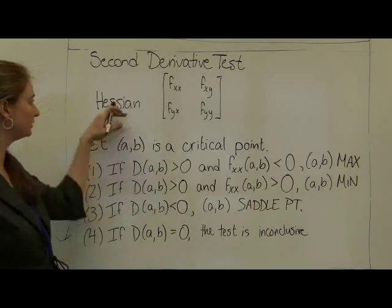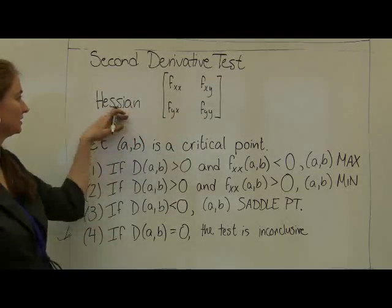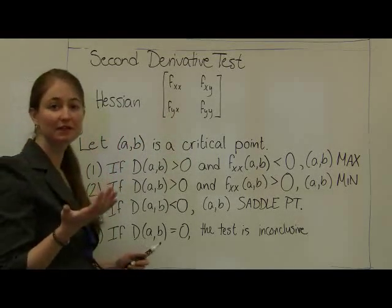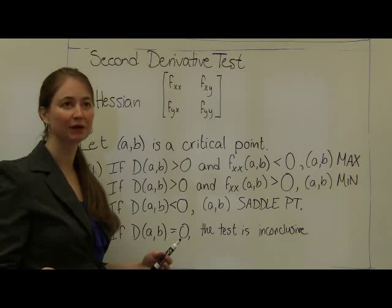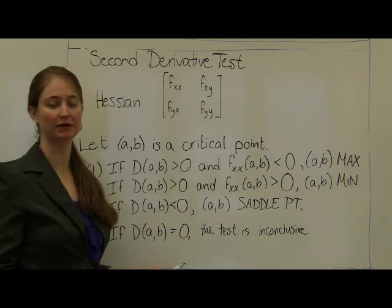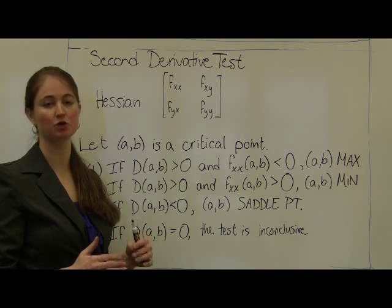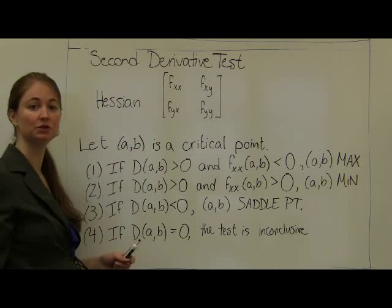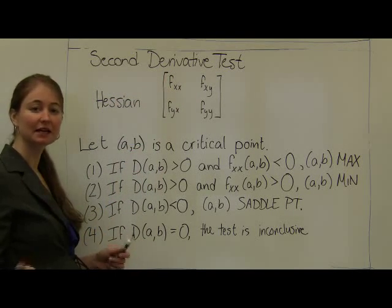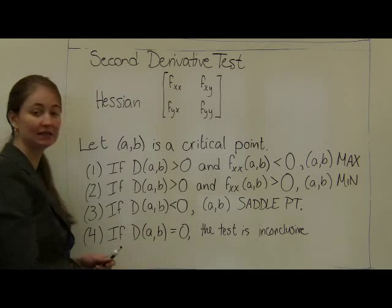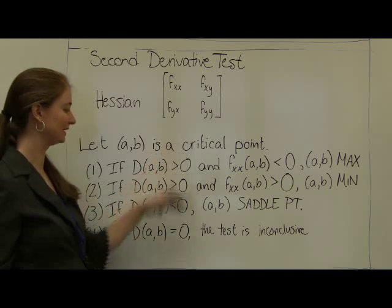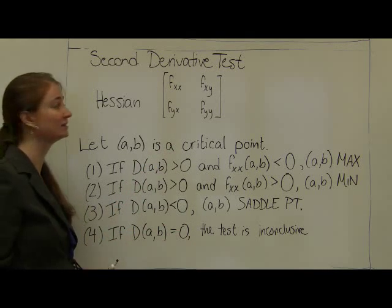There's a lot of writing on the board. It would be really convenient if we can algebraically evaluate whether or not a critical point is a max value or a min value. It turns out we have a second derivative test that will help us do that. The second derivative test is much more complicated than the one we saw for single variable functions, and I'm going to walk through what exactly it is telling us.